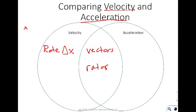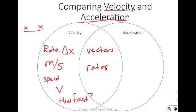Velocity asks: I was here, and then I was here — how long did it take me to get there? It's the rate of change in position, measured in meters per second. We represent velocity with a v, and it describes how fast you're going. Acceleration, on the other hand, is very different — it is the rate of change in velocity: how much are you getting faster, or how quickly does it take you to change your speed?